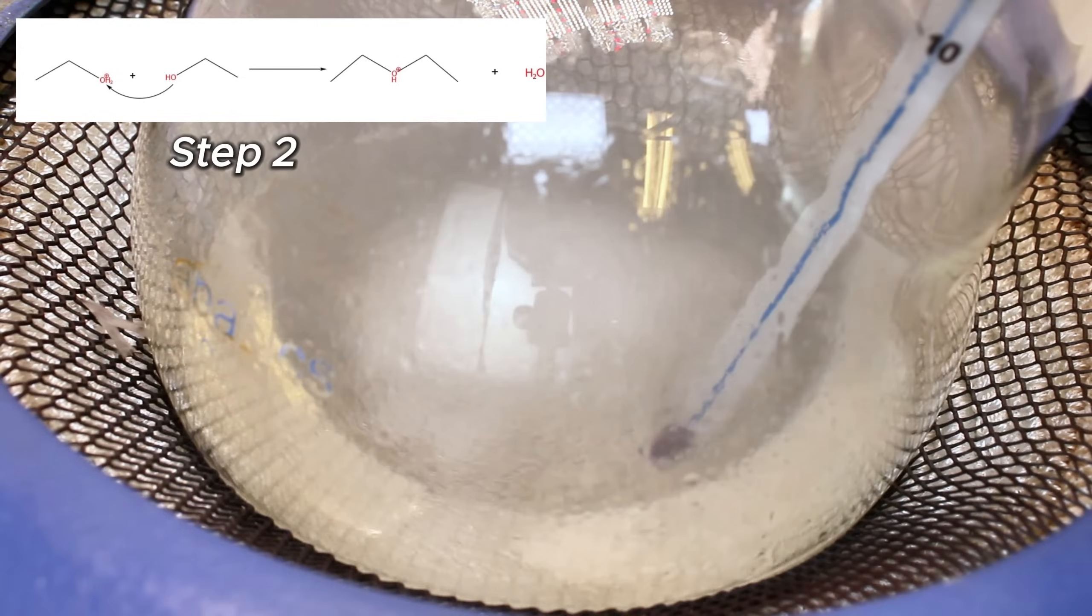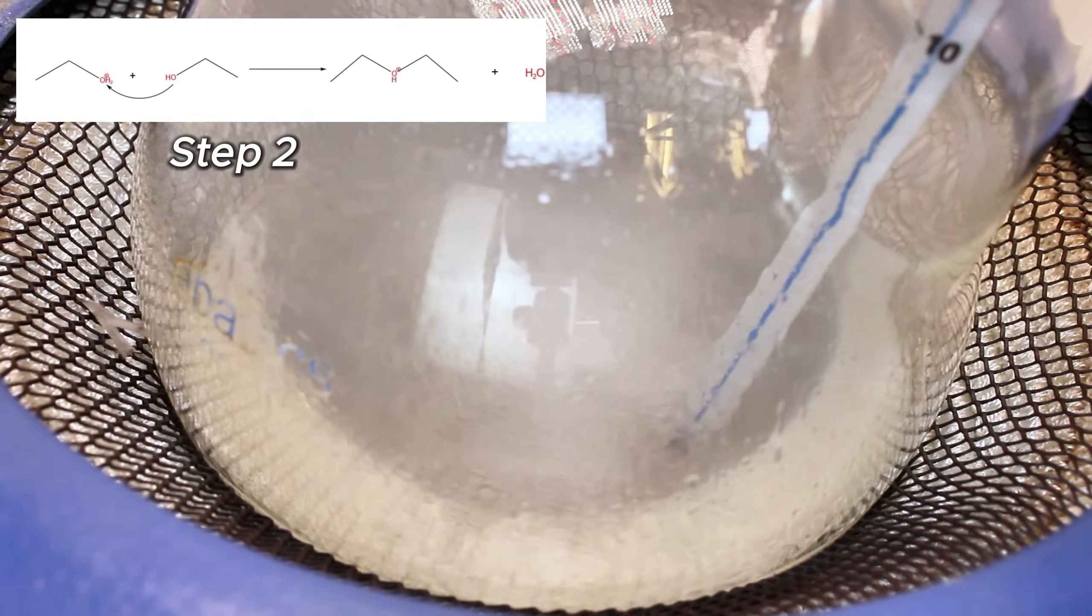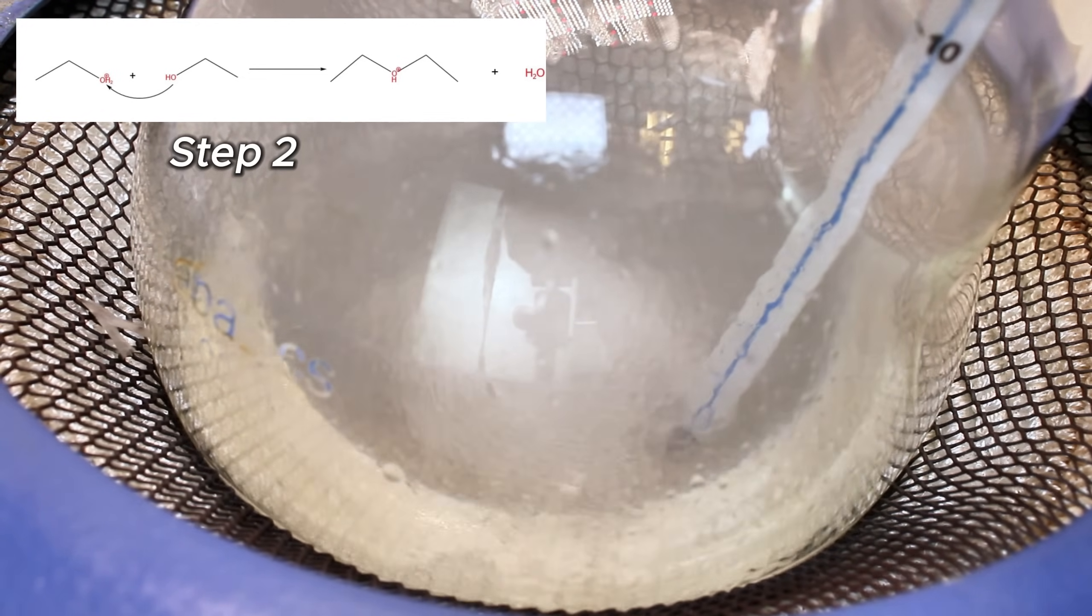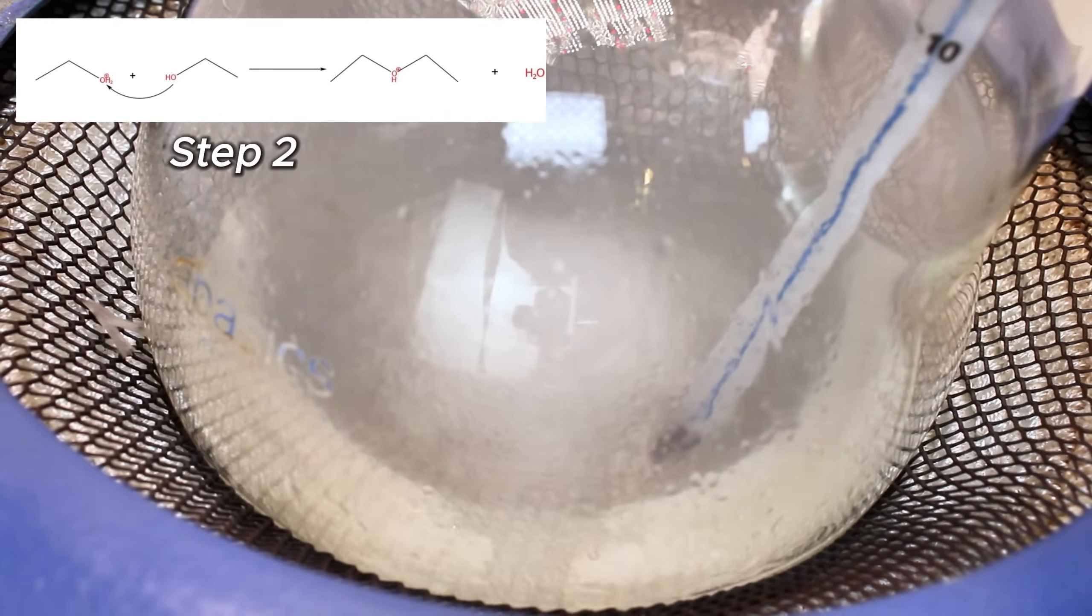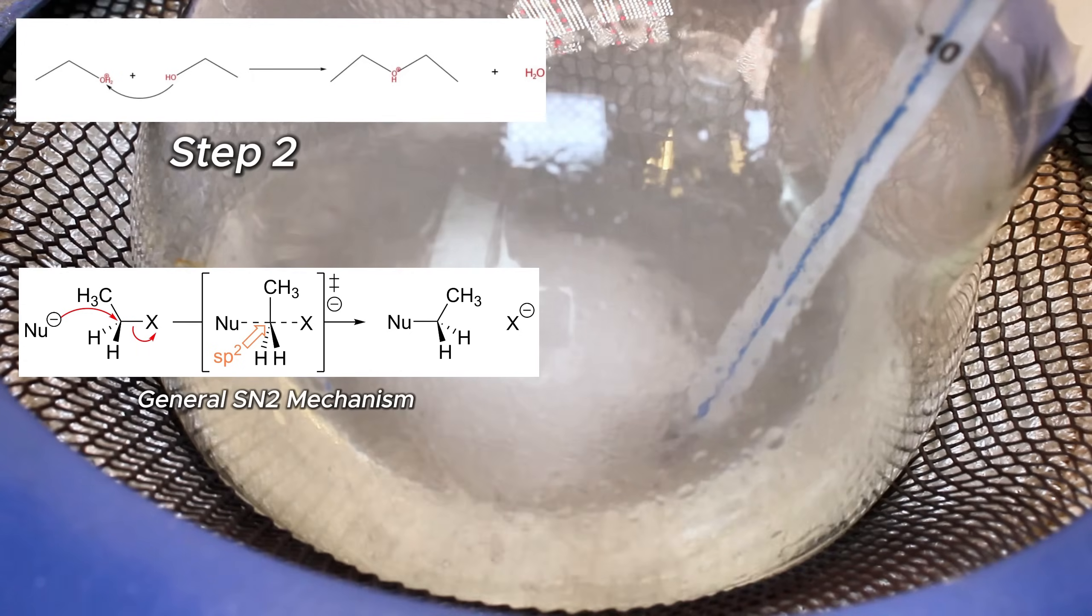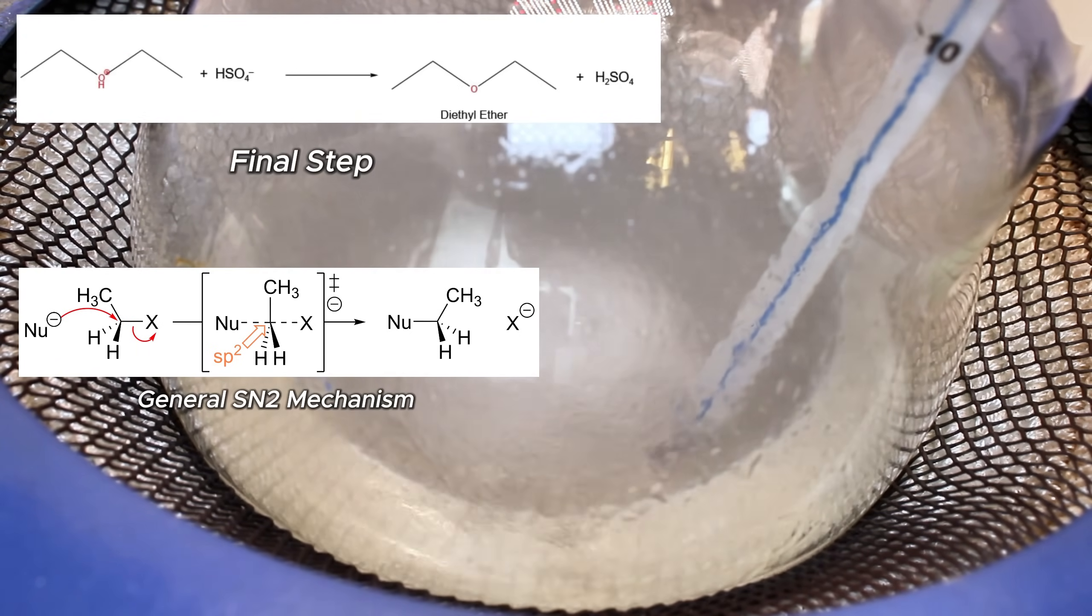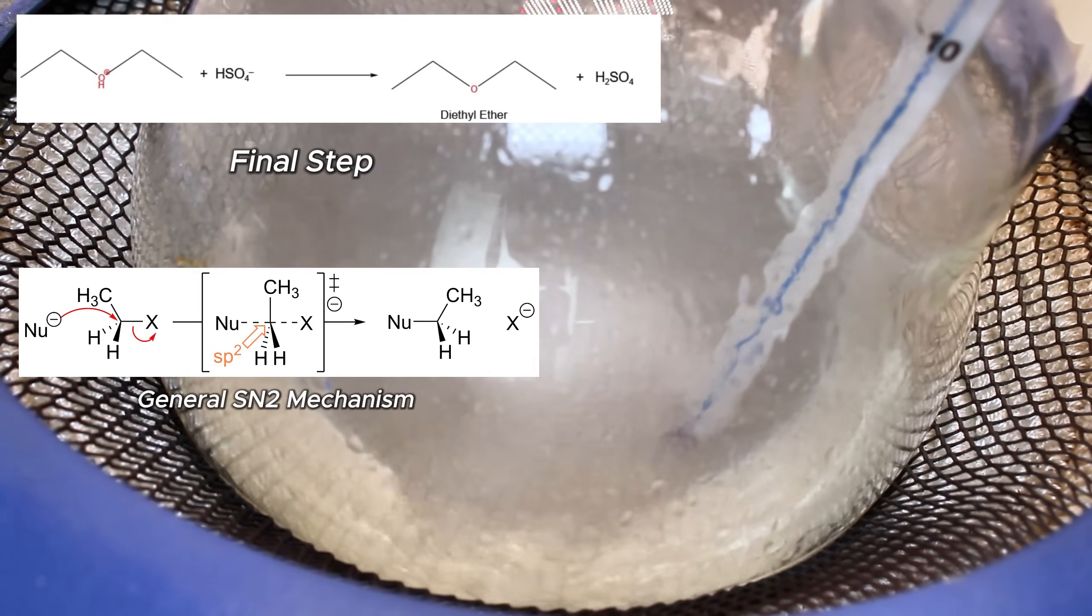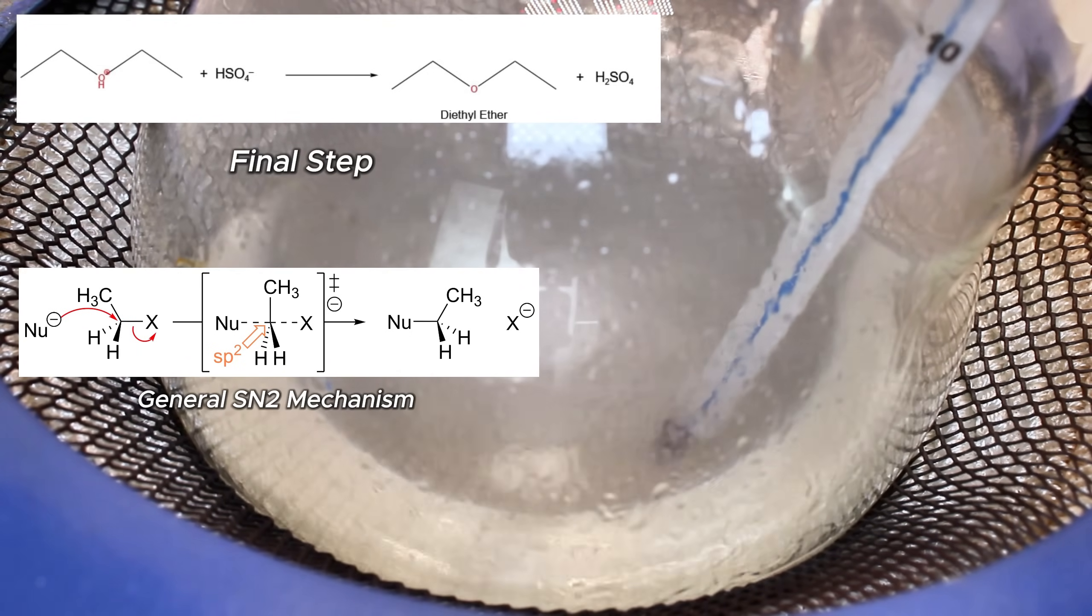In the second step, a nucleophilic oxygen atom of an unprotonated ethanol binds to the electrophilic protonated ethanol and simultaneously displaces one molecule of water, which makes this an SN2 reaction. In the third and final step, the ether molecule is deprotonated, which reforms the sulfuric acid catalyst and liberates gaseous diethyl ether.